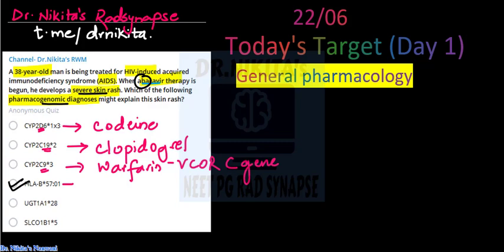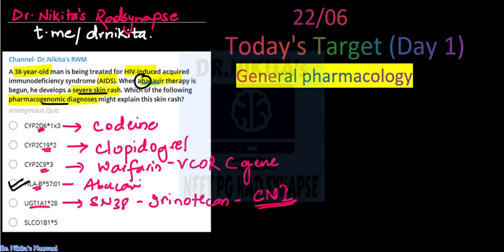HLA-B57, AB we said is Abacavir. UGT1A1, UDP glucuronyl transferase, basically we said it is required for removal of SN38, which is the metabolite of irinotecan. And UGT1A1 is absent in Crigler-Najjar type 1, so that is why it should not be given in Crigler-Najjar syndrome. SLCO-1B1, S for S, which codes for organic anion transporter protein. It increases simvastatin toxicity and causes myopathy.